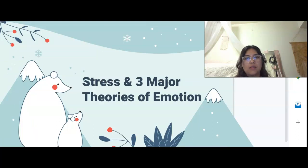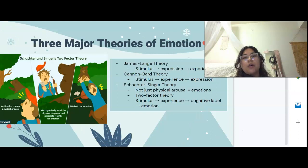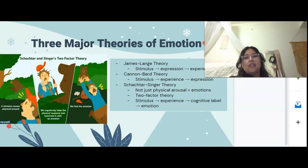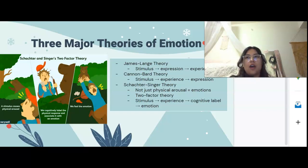Now we're going to talk about stress and the three major theories of emotion. The James-Lange theory states that a stimulus causes an expression, and then that causes an experience. As an example: you have an exam tomorrow and you consider that a really stressful thing. The exam is the stimulus, and his theory is that if you change your expression — such as smiling more — you could improve your overall experience of stress and change it to more of a content mood.